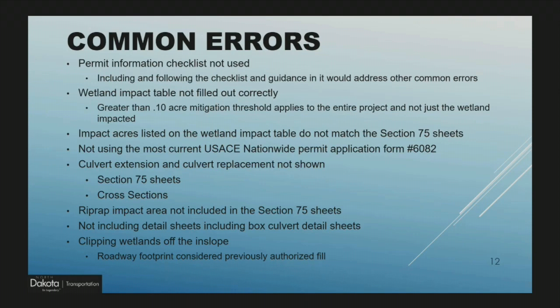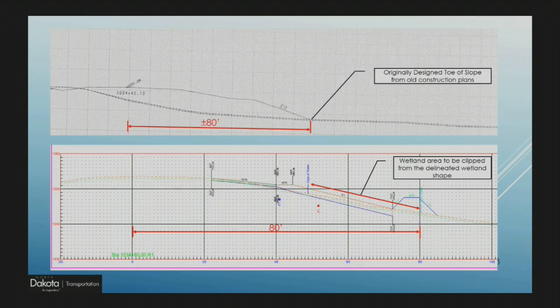Not including detail sheets — including box culverts or bridge details — is another error. Also, not clipping wetlands off the end slope: the roadway footprint is considered previously authorized fill, so theoretically we already permitted that impacted fill and mitigated for it, or it may be prior to mitigation being required. To do this we need to find the original toe slope of the constructed road by looking at old plans, determining what the original toe slope was for the construction, and translating that offset onto our new plan set. Any area from the original toe slope up the in-slope at wetlands, we clip off the delineated wetland shape.